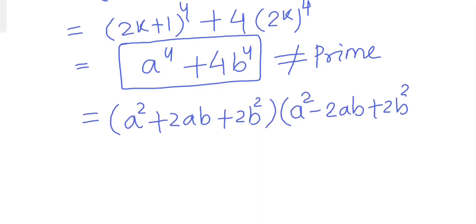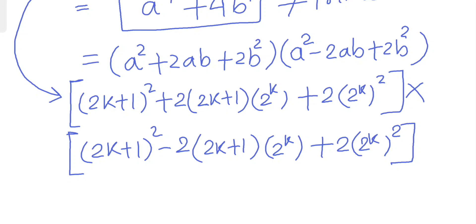a to the power 4 plus 4b to the power 4 equals (a squared plus 2ab plus 2b squared) times (a squared minus 2ab plus 2b squared). These are the two factors we have.